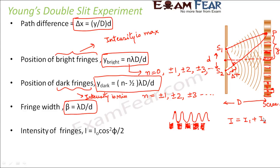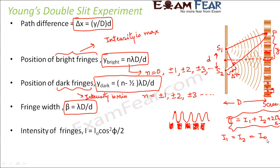When two waves superimpose, they form a resultant wave with intensity I equals I1 plus I2 plus 2·sqrt(I1·I2)·cos(phi). If we assume I1 equals I2 equals I0, then the intensity simplifies to I equals 4·I0·cos²(phi/2). This is a generalized expression derived from the basic interference formula.